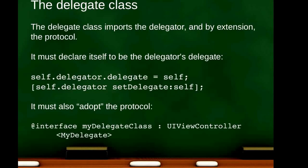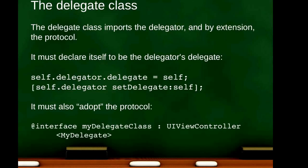So we've talked about the delegator and a little bit about the protocol. What about the delegate class? The delegate class imports the delegator and by extension it imports the protocol, because the delegator is either importing the protocol or declaring it inline. The delegate class must declare itself to be the delegator's delegate. Since we already have a property called delegate, the delegate class sets self.delegator.delegate = self. This makes the delegate class the delegator's delegate. The delegator doesn't know, nor does it care, what the identity of the delegate class is — but the delegate class knows who its delegator is.